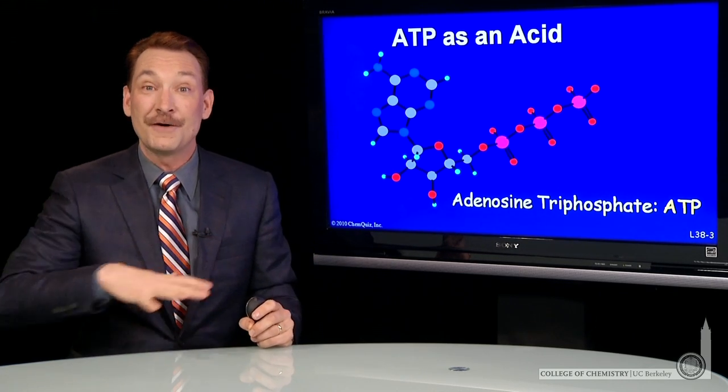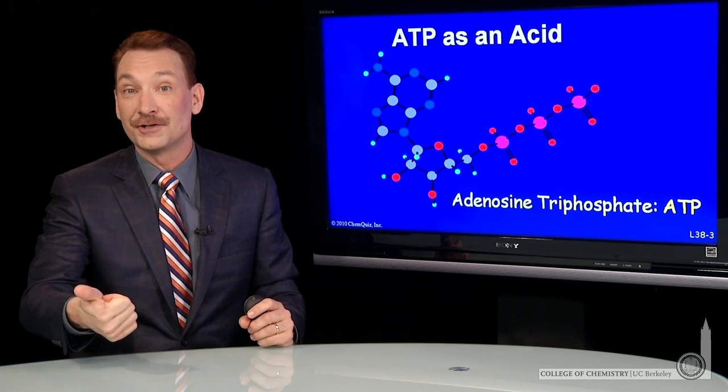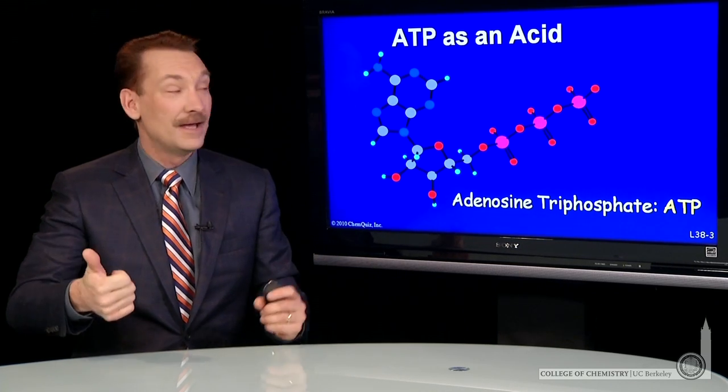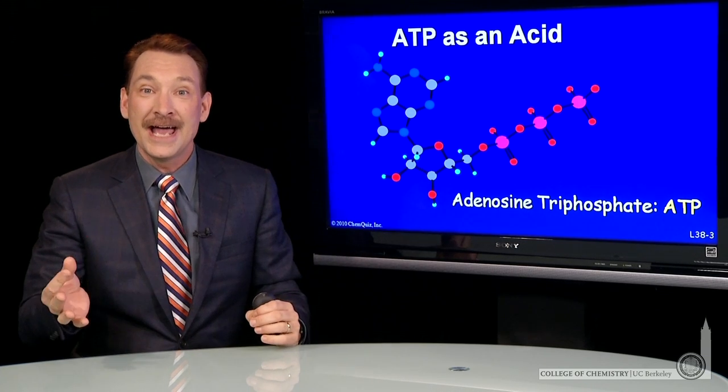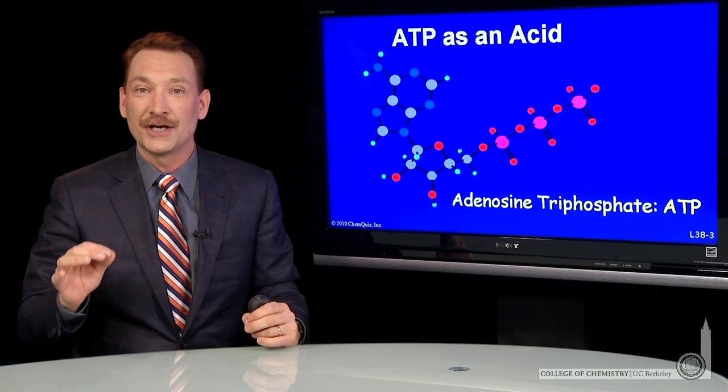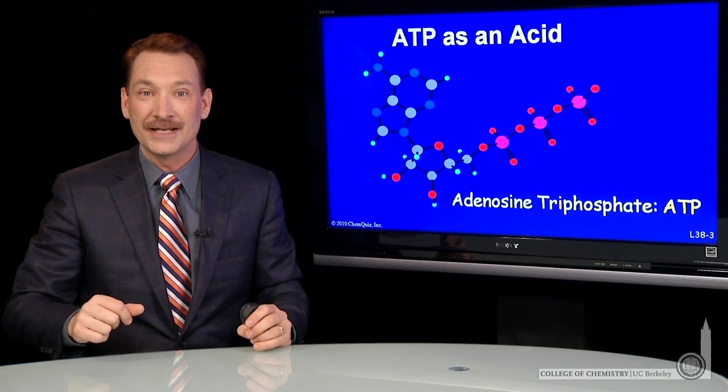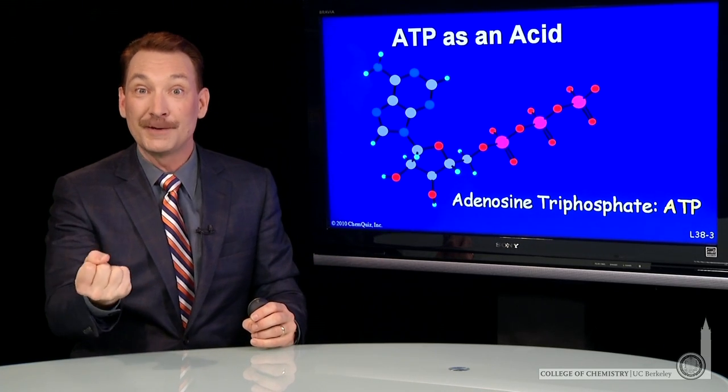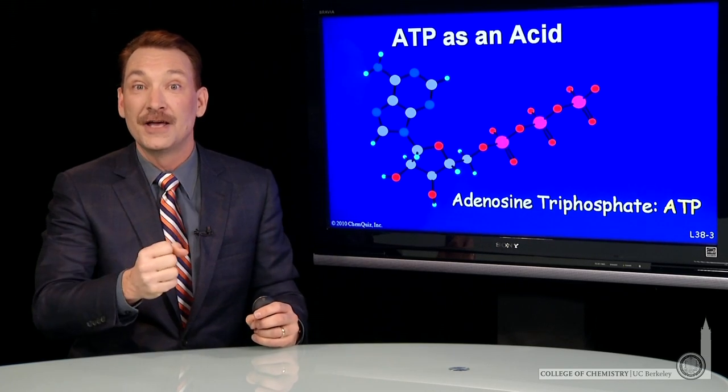It's important and it's found everywhere because it's, one, a precursor to DNA - adenine is one of the four bases in DNA - and it's an energy storage and transfer molecule. So when you metabolize glucose in your body, that energy is stored temporarily in ATP and then transported about your cells to where it's needed.